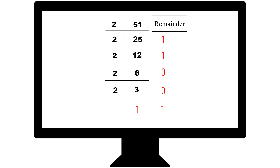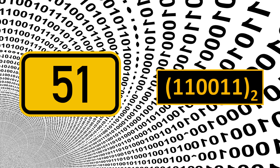Now all you have to do is write the remainders from bottom up, including the last number 1. So the number 51 written in binary form is 110011.